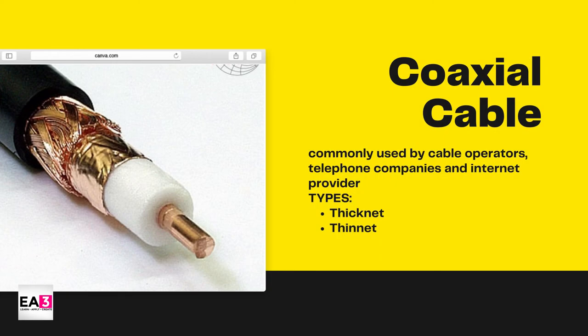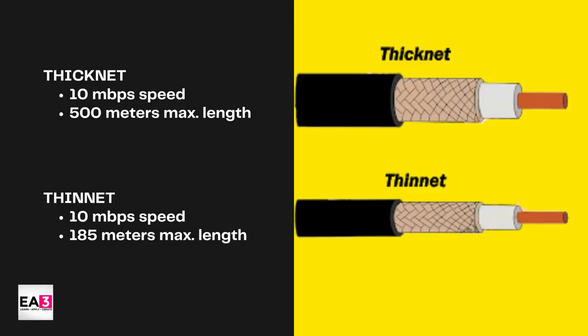Now let's go to coaxial cable. It is a copper cord cable surrounded by heavy shielding that is used to connect computers to the network. It is commonly used by cable operators, telephone companies, and internet providers, but it is slowly being replaced by fiber optic cables. Its two types are thicknet and thinnet. Their appearance is almost the same, but thinnet is thinner than thicknet — well, it's obvious from the name. They are both capable of 10 Mbps speed, but thicknet has a maximum length of 500 meters while thinnet is only 185 meters.